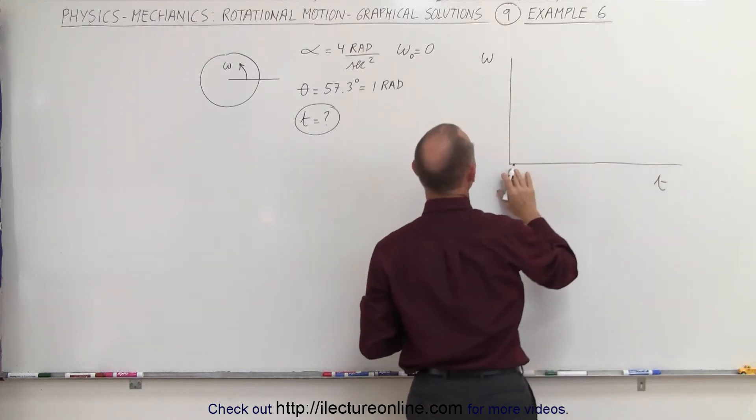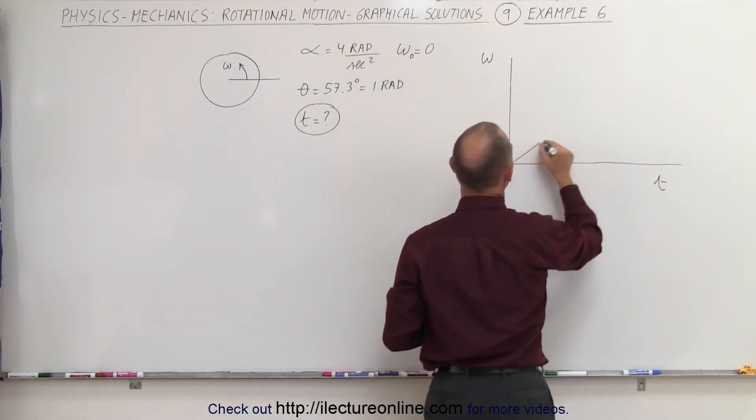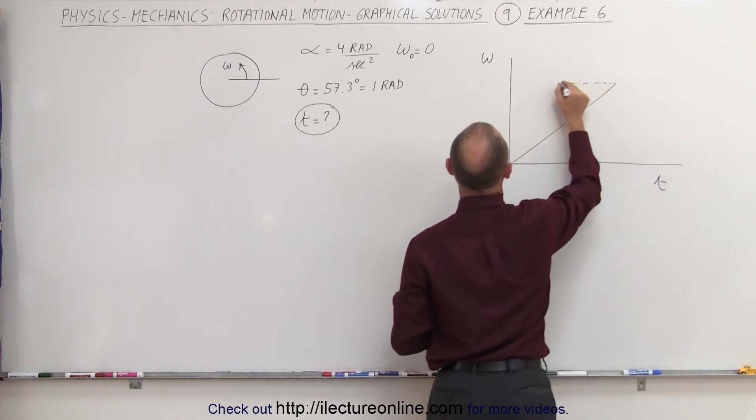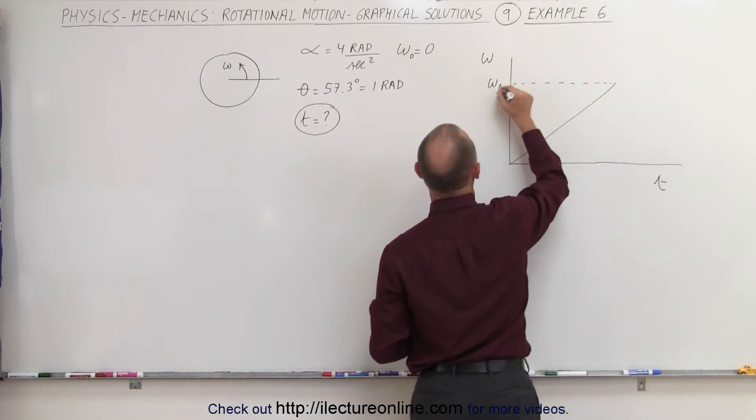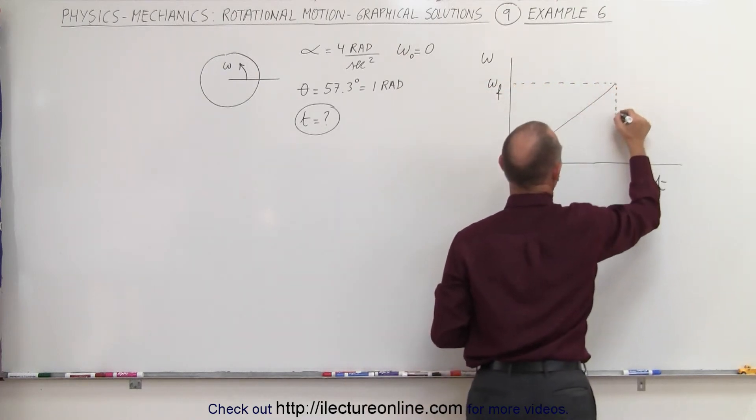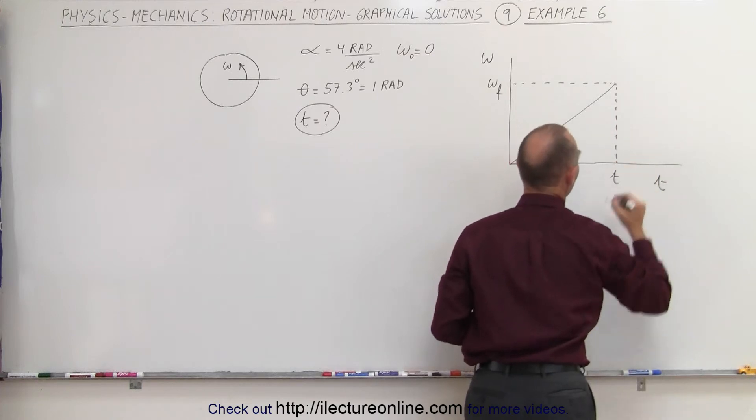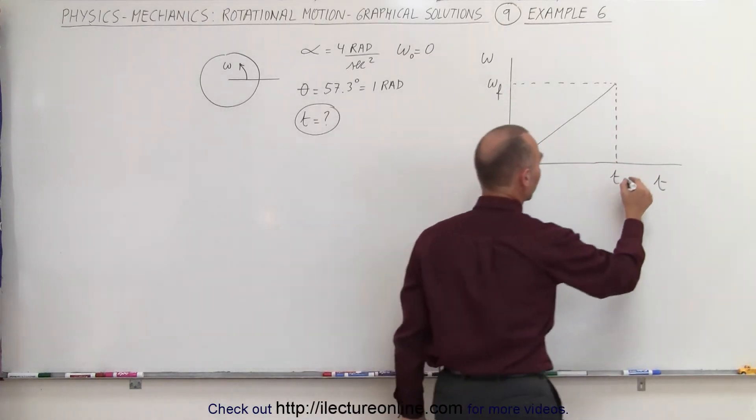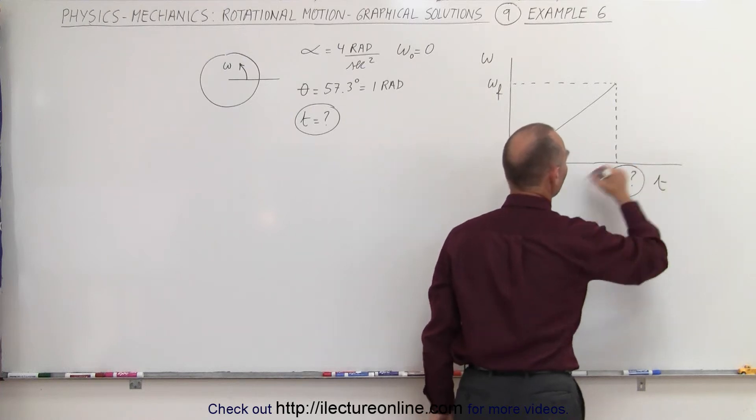And we start with an omega equal to zero, increase into some final omega, we don't know what the final omega is, and that takes a certain amount of time, and we don't know what time that took. So there's two unknowns, and this is the one we're looking for, the unknown time.